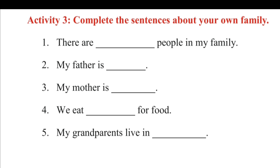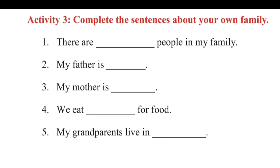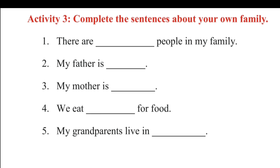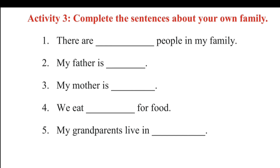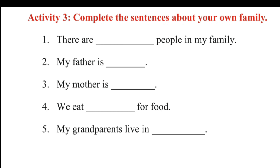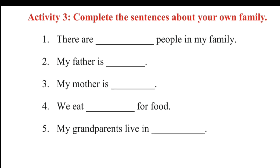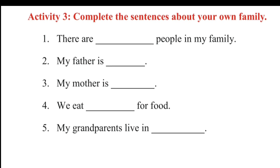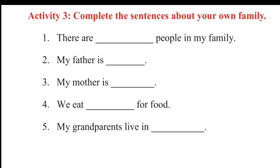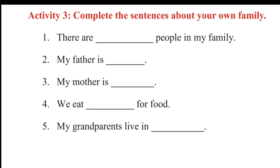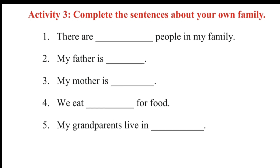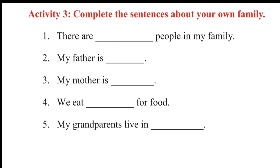Activity 3 mein diya hua hai: Complete the sentences about your own family. Means, is activity mein hum ko apni family se sambandit jankari ko fill karna hai. Jaisa ki first sentence mein diya hai, there are blank people in my family. To aapki family mein jitne log hain, unki sankhya yahaan par likhni hai.